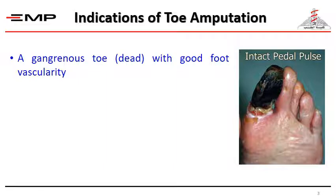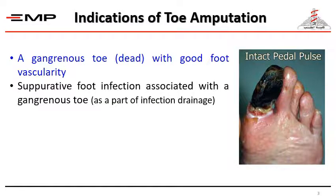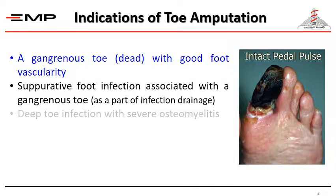Toe amputation is indicated in the following clinical situations: a gangrenous toe, which is a dead toe, with good foot vascularity; separative foot infections associated with the gangrenous toe as a part of infection drainage; and deep toe infection with severe osteomyelitis.